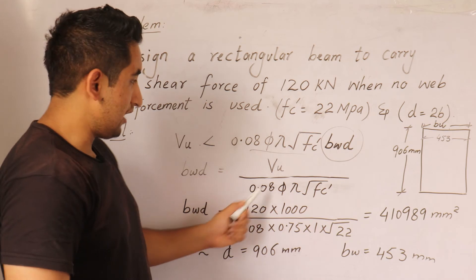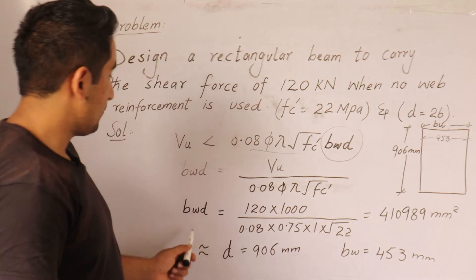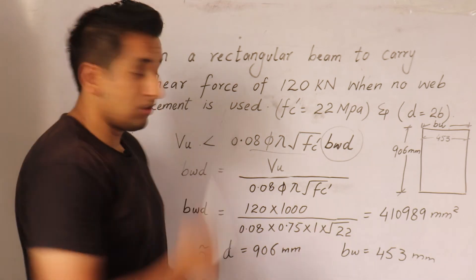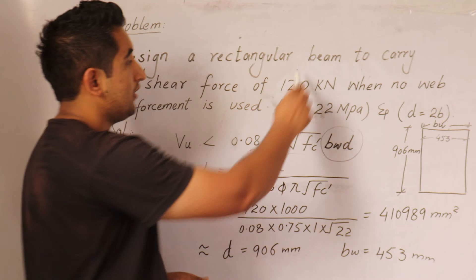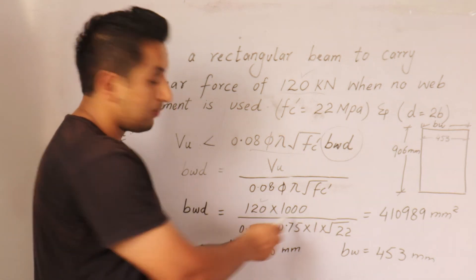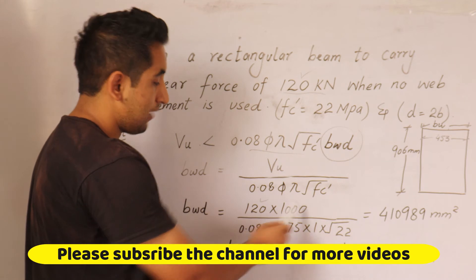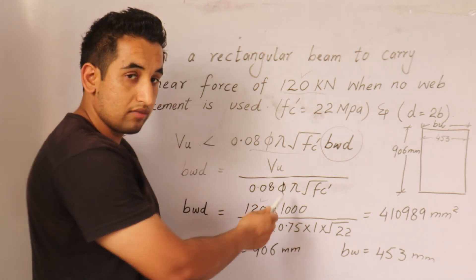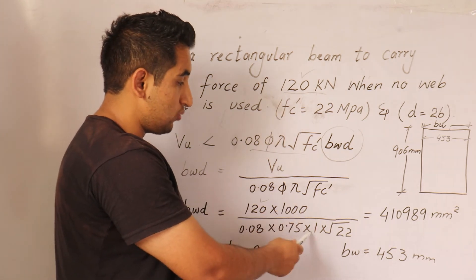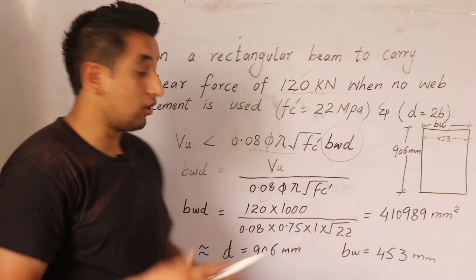Rearranging gives us: BW × D = VU divided by (0.08 × phi × lambda × square root of fc'). Putting in the values: VU is 120 kilo Newtons, converted to 120,000 Newtons. Phi for shear is 0.75, lambda is 1, and fc' is 22 MPa. After solving, we can get the required cross-sectional area of the beam.